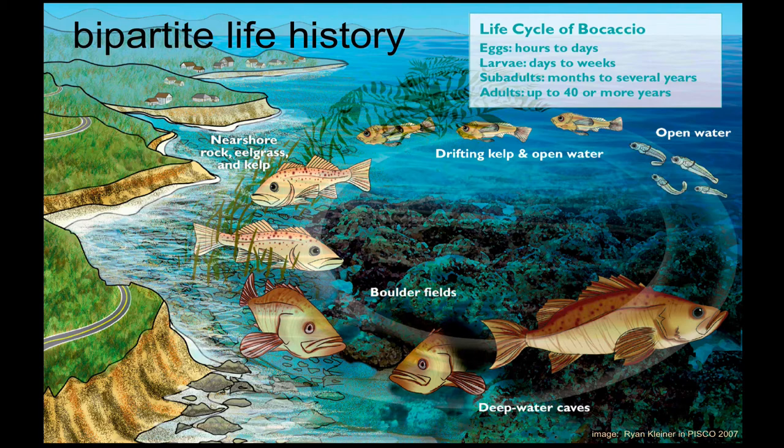A closed population would be something like a population of deer in a valley. If we want to know how many baby deer we're likely to have next year, we count the number of deer right now and the number of pregnant mothers, and that gives a decent estimate. In contrast, open populations are much more difficult to predict.